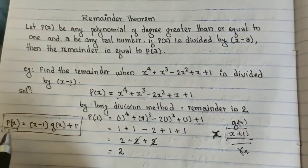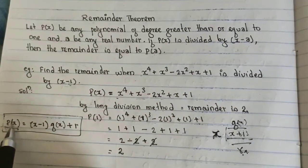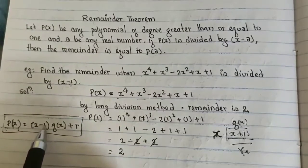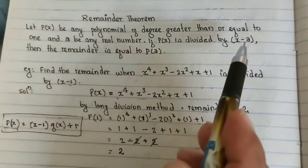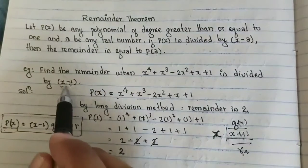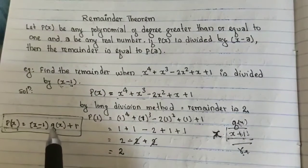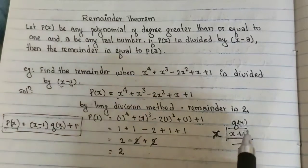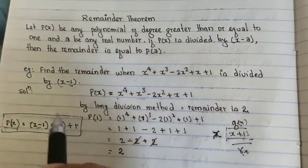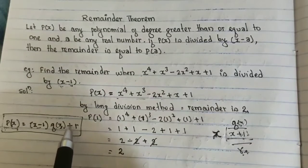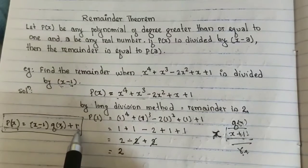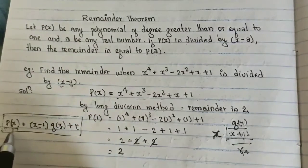So same way here, to get this P(x), I can write (x - 1), which is my divisor, (x - 1) into q(x), I have taken here q(x), suppose this is my quotient, q(x) plus my remainder. So I will get this P(x).